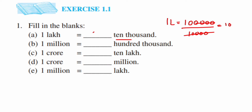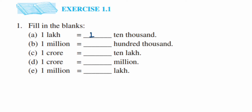So the answer is ten. Next question: one million is equal to how many hundred thousands? Hundred thousand is nothing but one hundred multiplied by one thousand, which gives one lakh — that has five zeros.